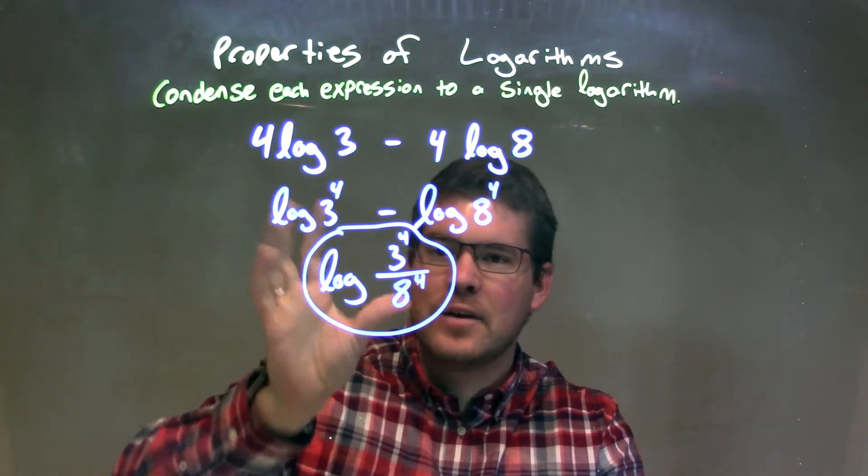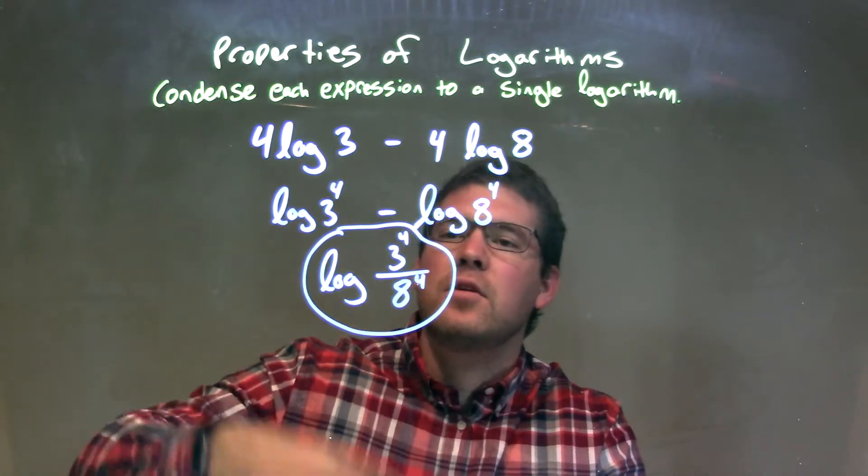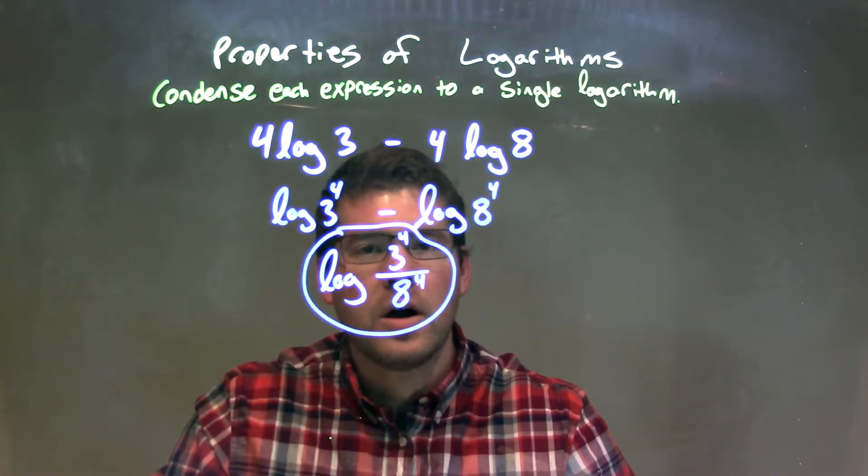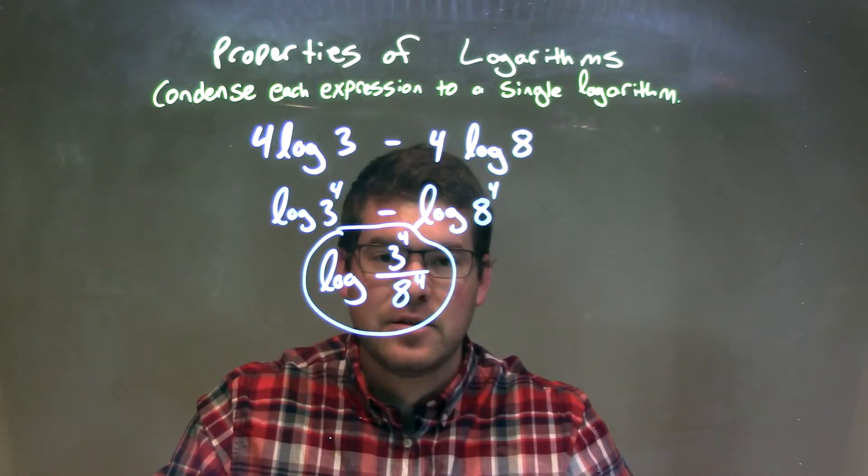Then that subtraction causes a division when we condense it. So we have 3^4 over 8^4, giving us, again, our final answer of log of 3^4 divided by 8^4.